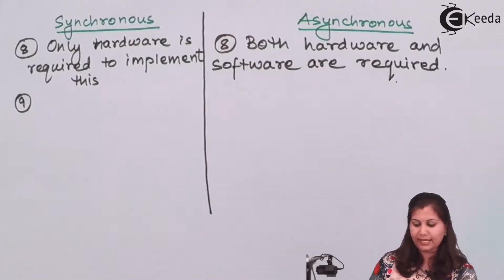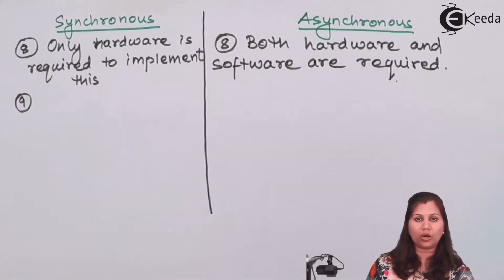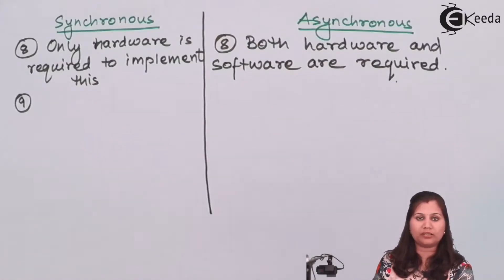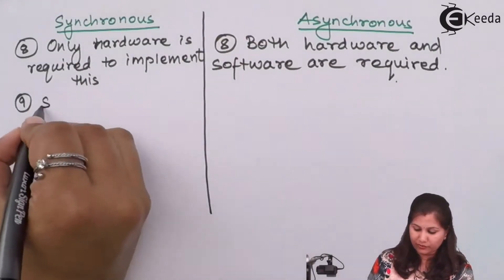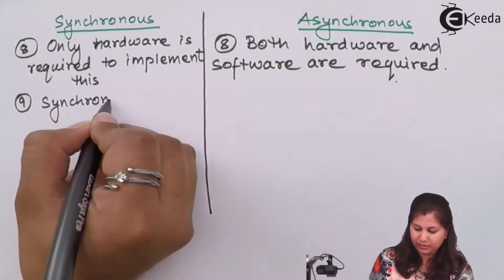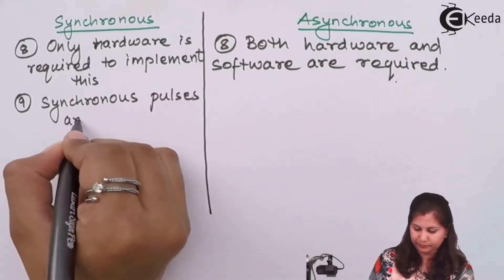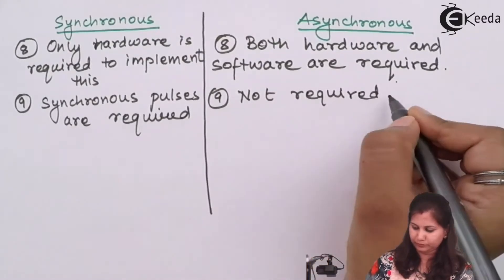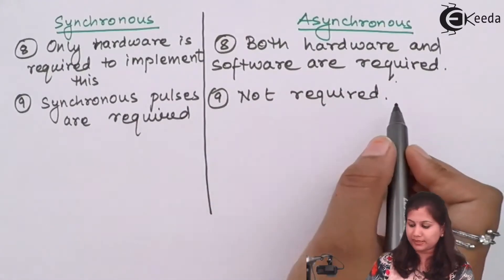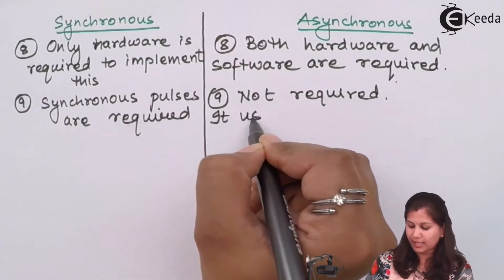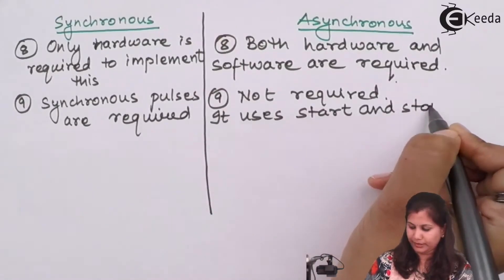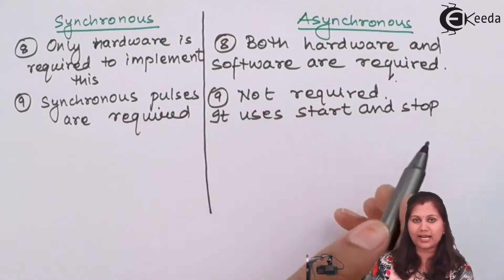The next difference is that in synchronous, clock pulses — synchronous pulses — are required, whereas in asynchronous no synchronous pulses are required because no clock pulse is used in this method. In asynchronous, start and stop bits are used instead of synchronous pulses.